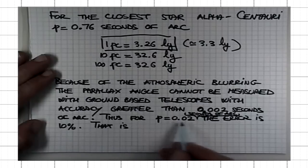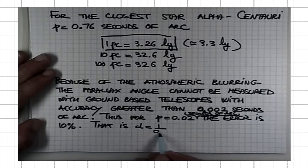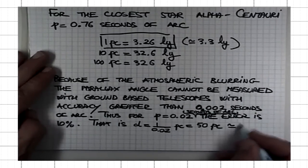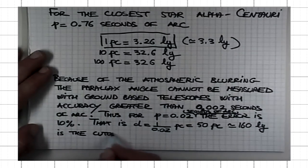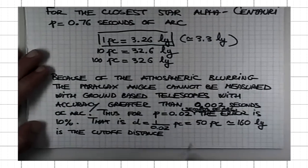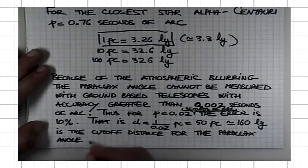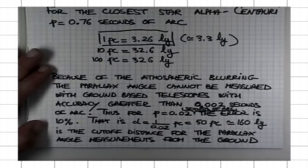What distance in parsecs corresponds to this parallax angle of 0.02 seconds of arc? If I multiply this by 3.3, I get about 160 light years is the cutoff distance for the parallax angle measurements from the ground.